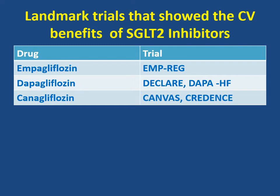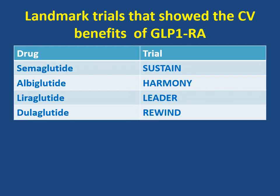What are the landmark trials that showed the cardiovascular benefits of SGLT2 inhibitors? The first is the EMPA-REG trial showing the benefit of empagliflozin; DECLARE (DAPA-HF) showing the benefit of dapagliflozin; and the CANVAS trial and CREDENCE trial showing the benefit of canagliflozin. For GLP-1 receptor agonists, the SUSTAIN trial showed the benefit of semaglutide, the HARMONY trial showed the benefit of albiglutide, the LEADER trial showed the benefit of liraglutide, and the REWIND trial showed the benefit of dulaglutide.